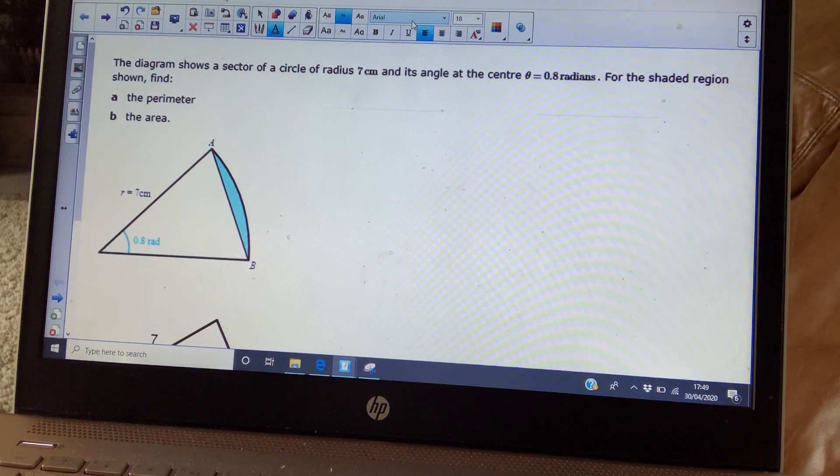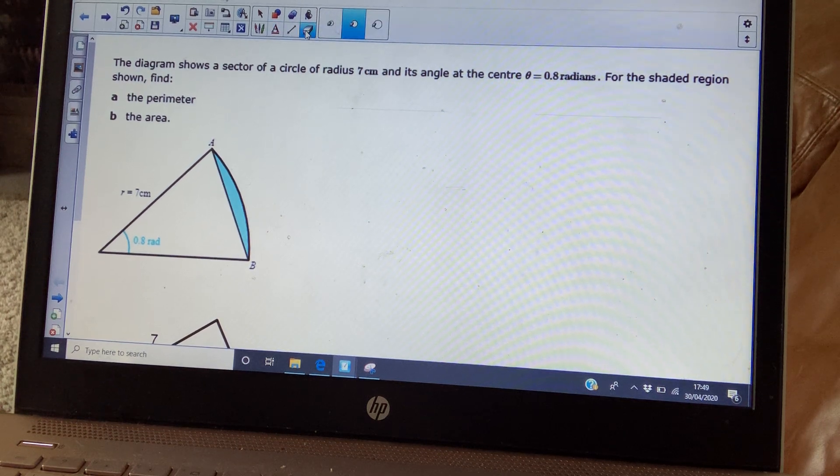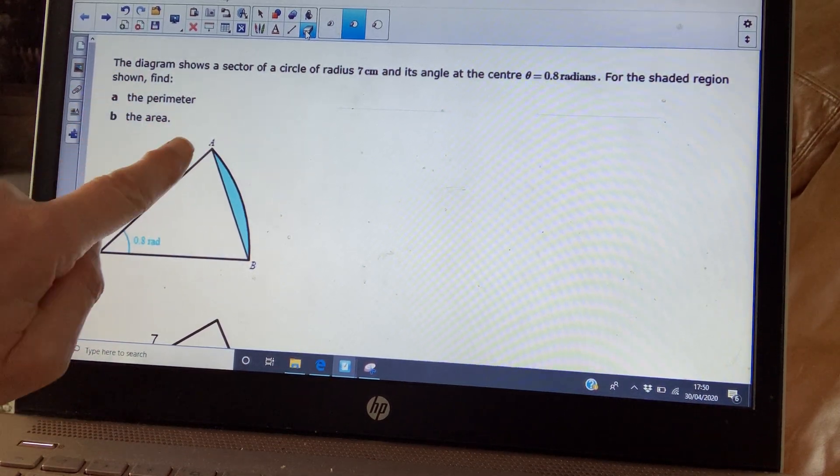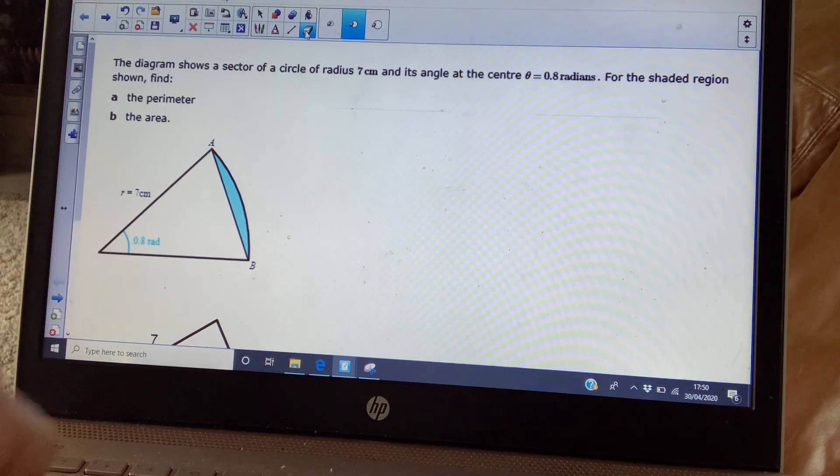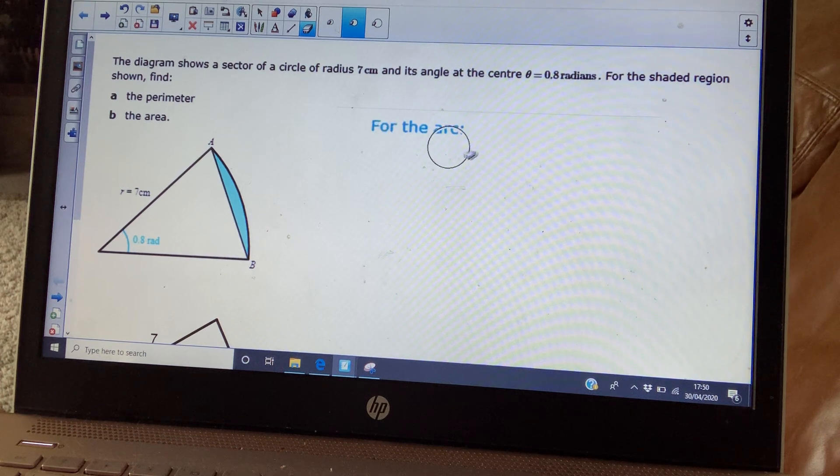So first of all, you've got a sector of a circle here with radius 7 and its angle here is 0.8 radians. We want to find the perimeter of the shaded region first. The arc length is just going to be 7 times 0.8, so that's pretty straightforward. So that's going to be 5.6 cm.